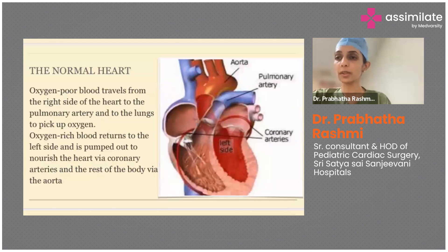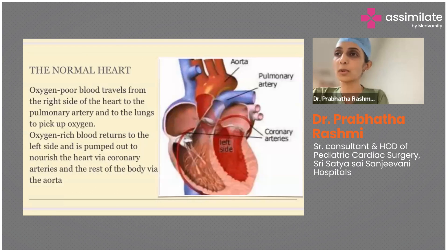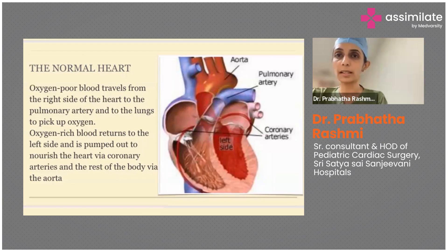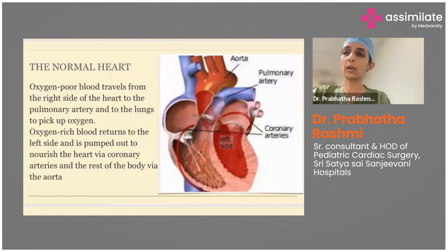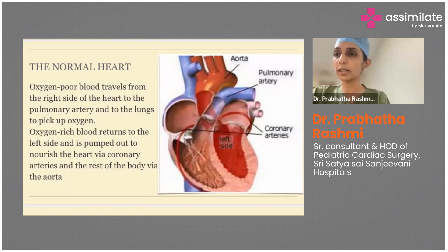Before I go to transposition, I want you all to understand the normal heart. On the right, what you see is the oxygen-poor blood which travels from the right atrium to the right ventricle, and from there to the pulmonary arteries, shown in blue. Via the pulmonary arteries it goes to the lungs where it gets oxygenated, then comes to the left atrium, then to the left ventricle, and then to the aorta. You can see two thin red vessels called the coronary arteries.